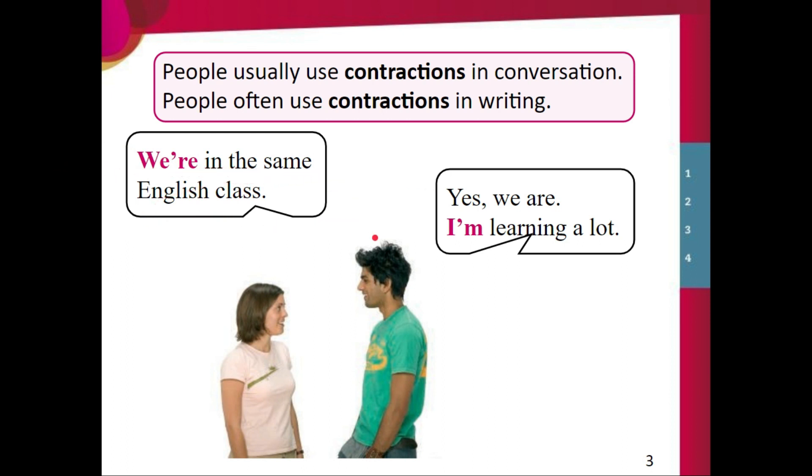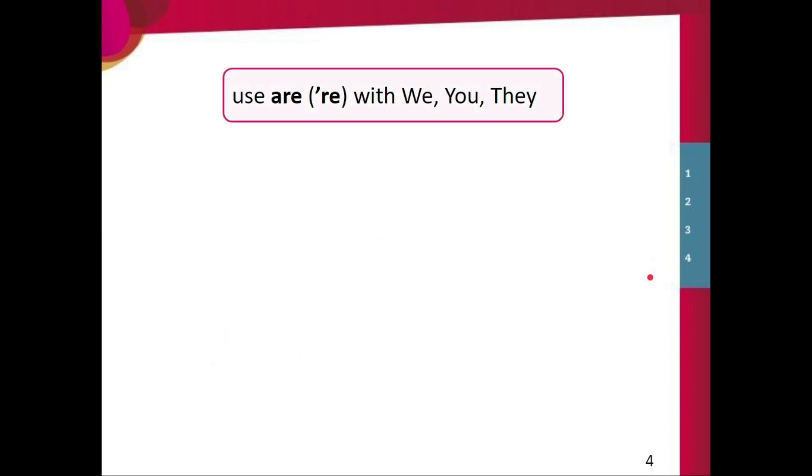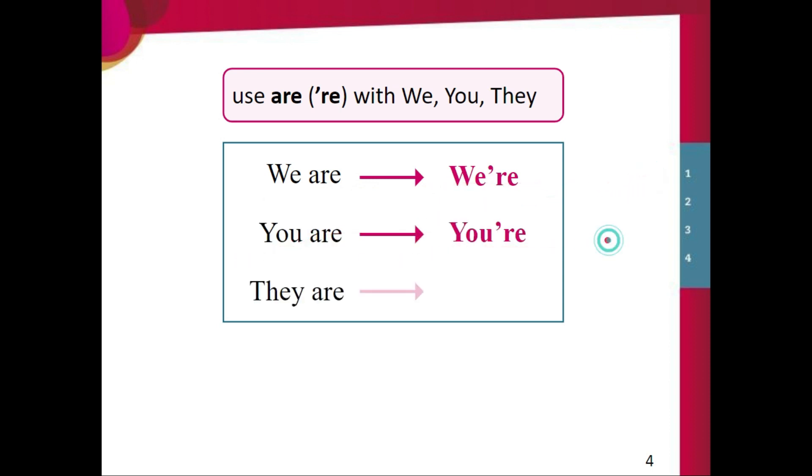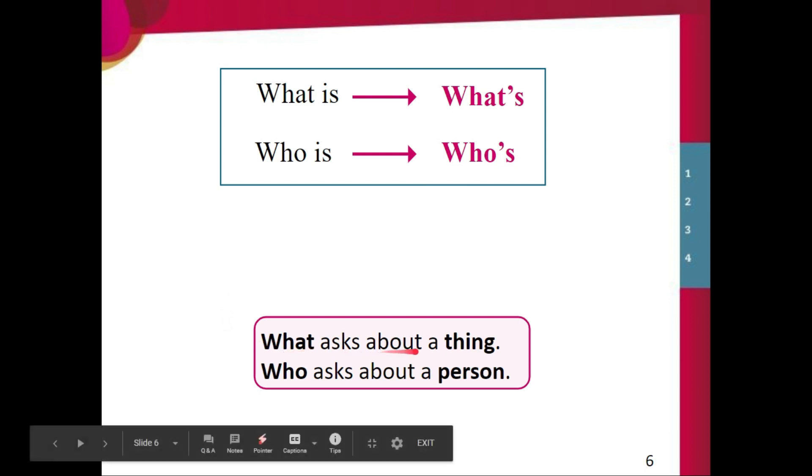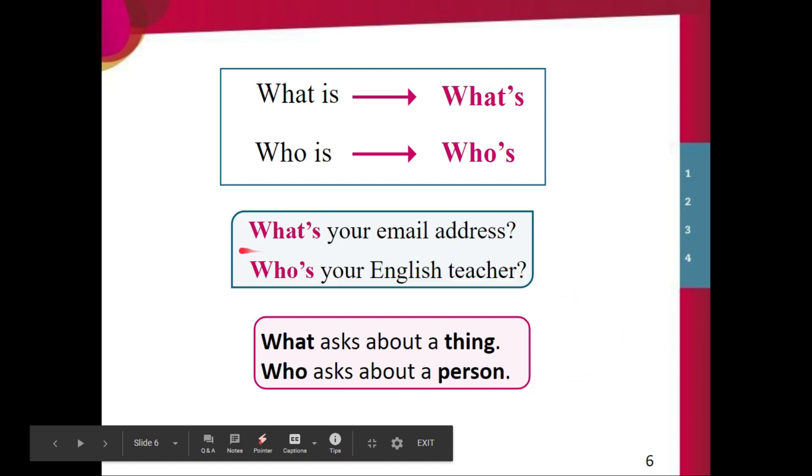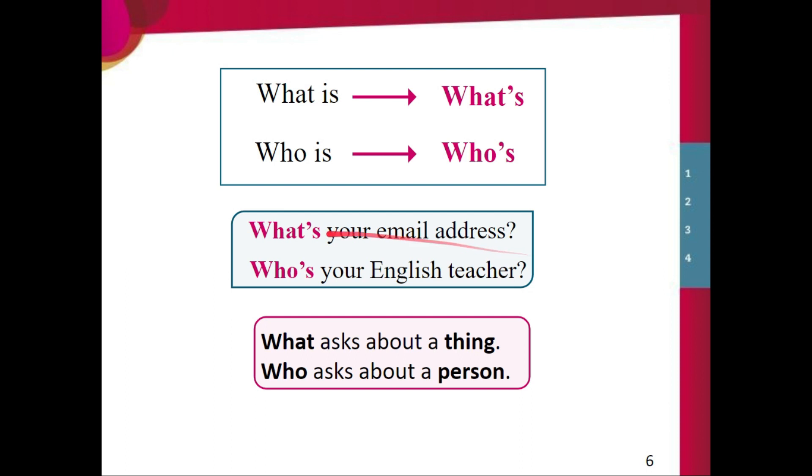We're in the same English class. Yes, we are. I'm learning a lot. So we have we are becomes we're. You are your. They are their. And what is becomes what's. Who is whose. Remember what asks about a thing and who asks about a person. So we say what's your email address. And here we're talking about a person, a teacher. We say who's your English teacher.